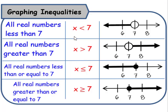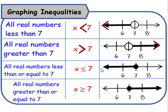Graphing inequalities. When we want to graph all real numbers less than 7, this would be x is less than 7. Notice that our inequality symbol is facing in the left direction, and our arrow is also facing in that same direction. Since we don't have an equal to sign, this would be an open circle. When the inequality symbol is facing to the right, the arrow faces to the right, and since we don't have an equal sign, we'll have an open circle. In cases with an equal to sign, the circles are closed.